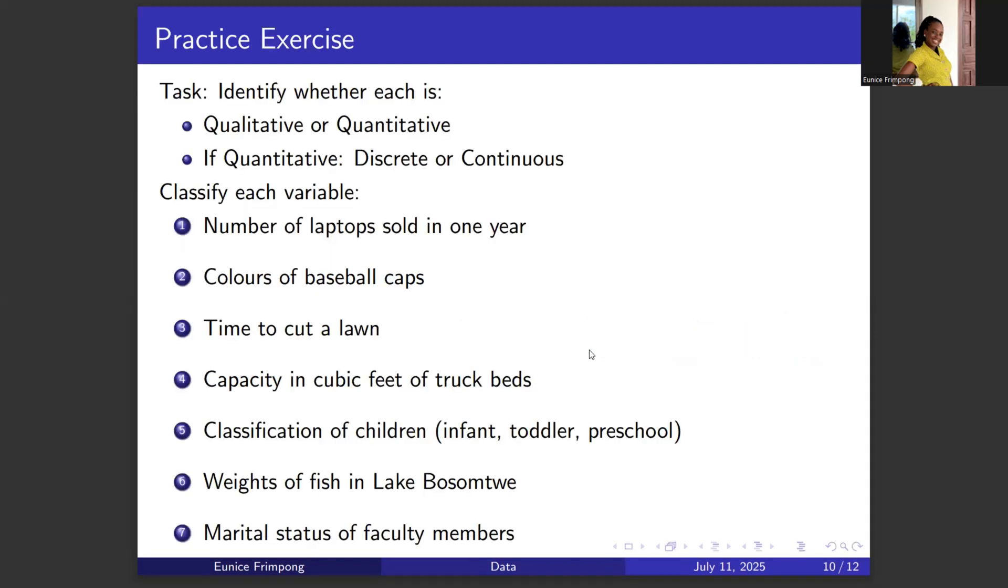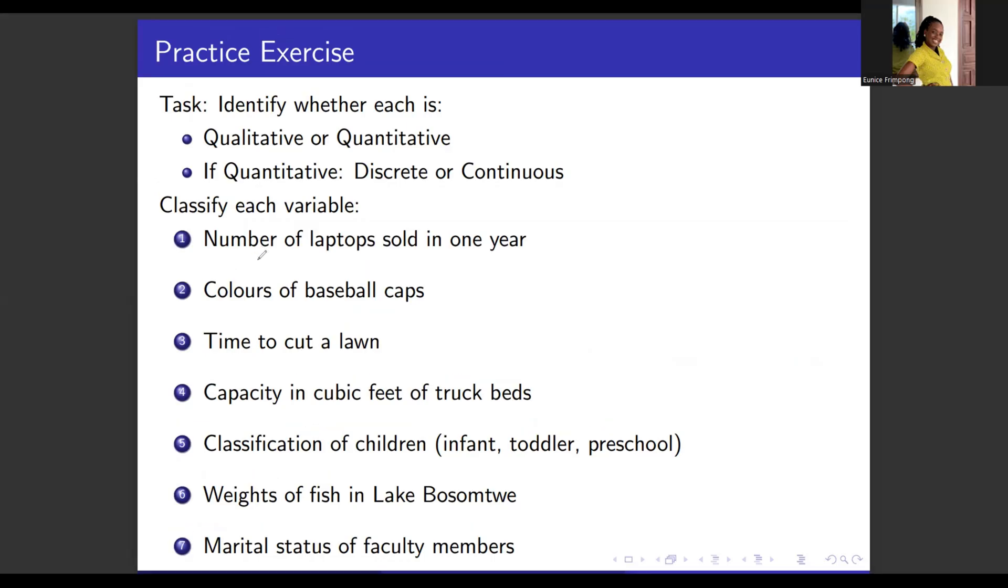Let's perform a practice exercise here. The task is to identify whether each is qualitative or quantitative. And if it is quantitative, is it discrete or continuous? The first question is number of laptops sold in one year. It is quantitative because it can be counted. If it is quantitative, is it discrete or continuous? This is discrete because we can count.